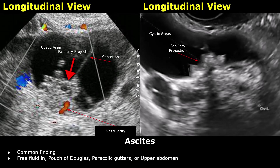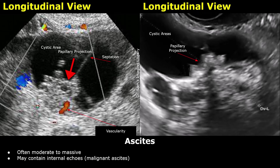Now we will discuss the findings related to ascites and peritoneal disease, which are common in ovarian serous cystadenocarcinoma, especially in advanced stages. Ascites is a very common finding and is often one of the earliest indirect clues to malignancy. On ultrasound, free fluid is typically seen in the pouch of Douglas, and as the disease progresses, it extends into the pericolic gutters and the upper abdomen. The amount of ascites is usually moderate to massive rather than minimal. Unlike simple benign ascites, malignant ascites may show internal echoes representing cellular debris, protein, or tumor cells, which helps differentiate it from transudative fluid.